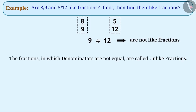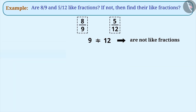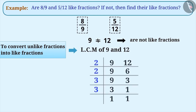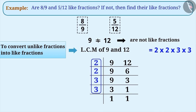Fractions in which denominators are not equal are called unlike fractions. To convert unlike fractions into like fractions, first we calculate the LCM of the denominators. The LCM of nine and twelve is two into two into three into three, that is, thirty-six.